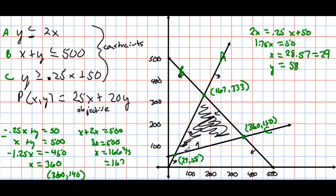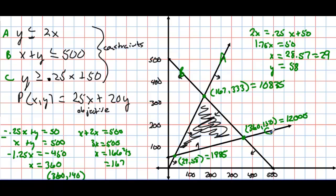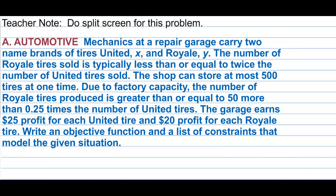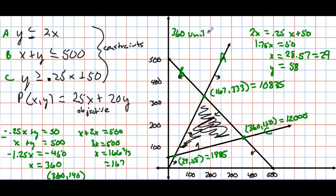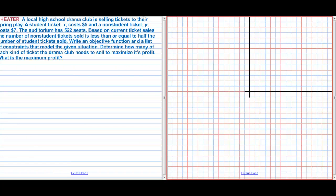Plugging the three vertices into the objective function P = 25X + 20Y: at (167, 333) we get approximately $10,835; at (360, 140) we get $12,000; at (29, 58) we get approximately $1,885. The maximum profit is $12,000. To maximize profit, the company should sell 360 United tires and 140 Royale tires.